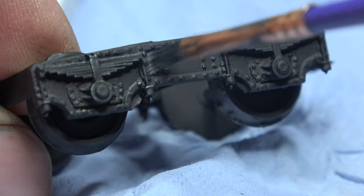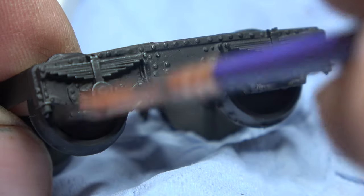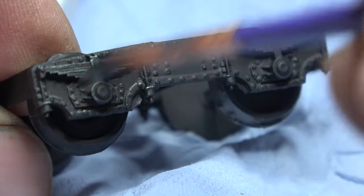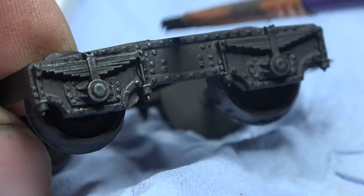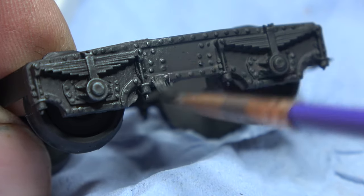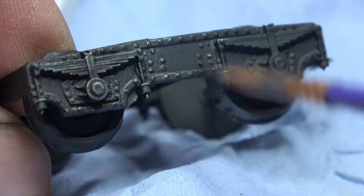Out with the dry brush with some metallic gun metal, just to bring out some details on the bogies and on the cast ends.